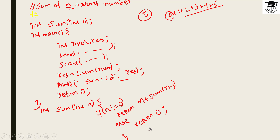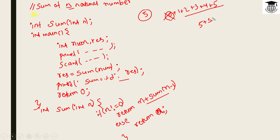If n is equal to 0, then return 0. Then we return n plus sum(n-1). So for n=5: 5 plus sum(4). We keep calling recursively. Each call reduces n by 1 until n reaches 0.